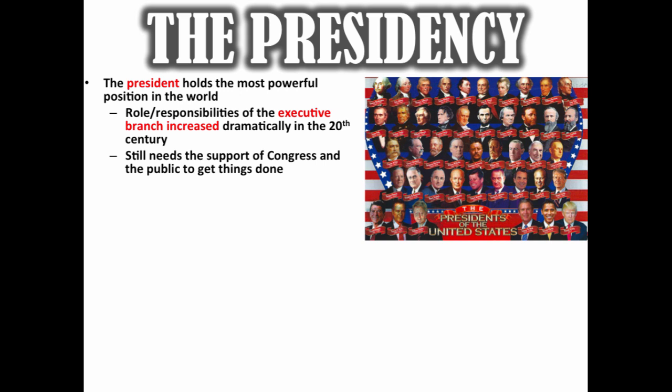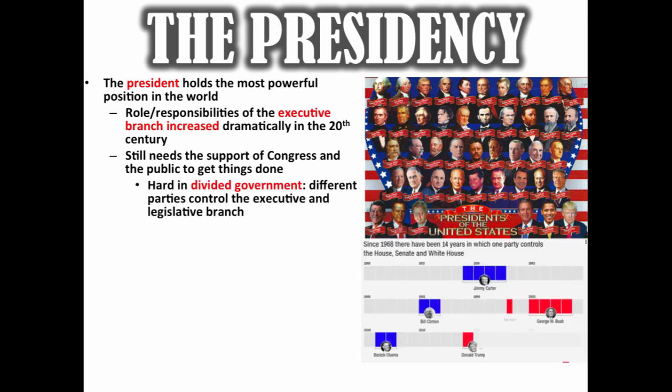This is all part of the Madisonian system of checks and balances. Americans tend not to like concentrations of power, so they want the president to solve all these problems, but there are checks in place. It is tremendously hard to solve problems, especially in divided government — different parties controlling the executive and legislative branch. You can see that has been the norm since 1968.